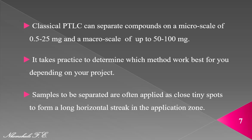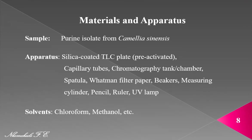Samples to be separated are often applied as tiny spots to form a long horizontal streak in the application zone. The purine alkaloids in tea consist mainly of caffeine; also present are theobromine and theophylline. In this schedule, we started by isolating purine alkaloids from a tea sample using a Büchner funnel. Thereafter, the ideal mobile phase that can separate identical compounds in the mixture was determined using analytical TLC. Exercise 3 is to further purify the purine isolate using Prep TLC, which will help to separate its components and isolate our desired compound.